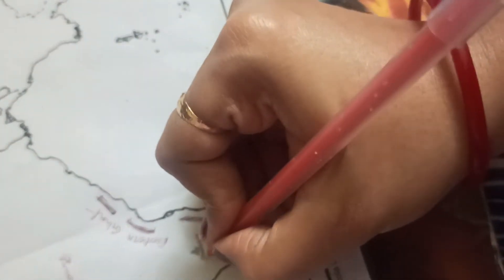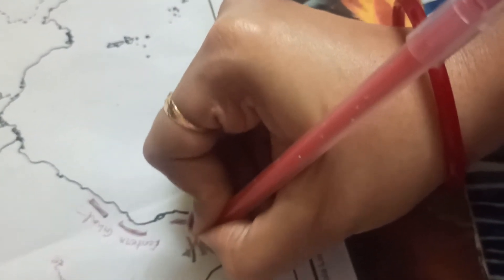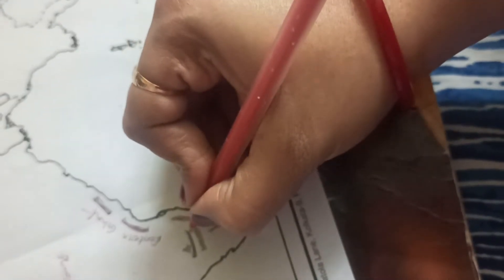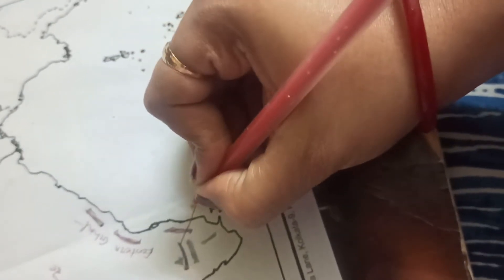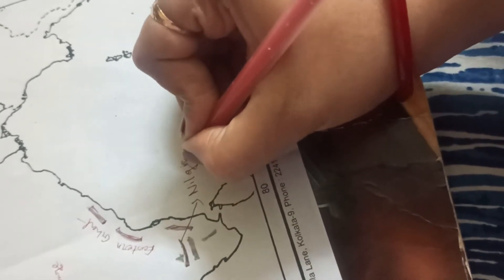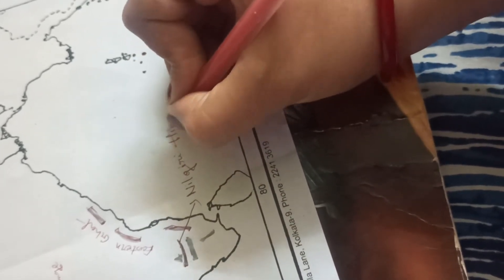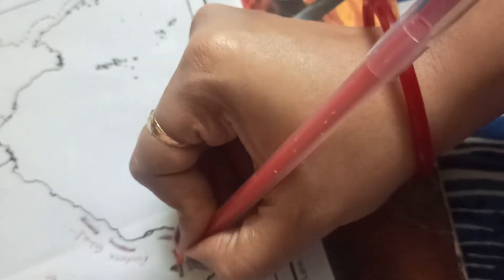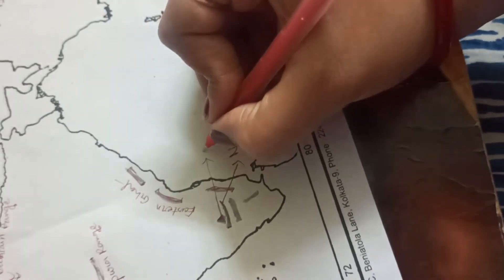Now this one. This one. This one is Nilgiri. Nilgiri Hills. And this one. This one. This peak is Dodabeta.